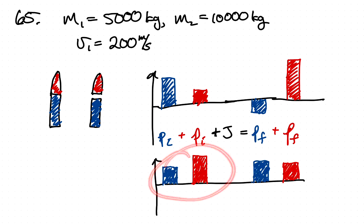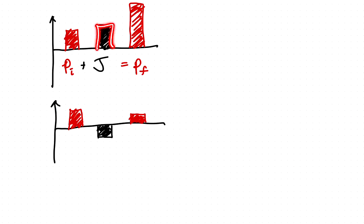Again, the sum of these two things has to be the sum of these two things. Now they said just look at the rocket as the system. And in that case, now we do have an impulse because we have an impulse acting on the rocket from the fuel being ejected.